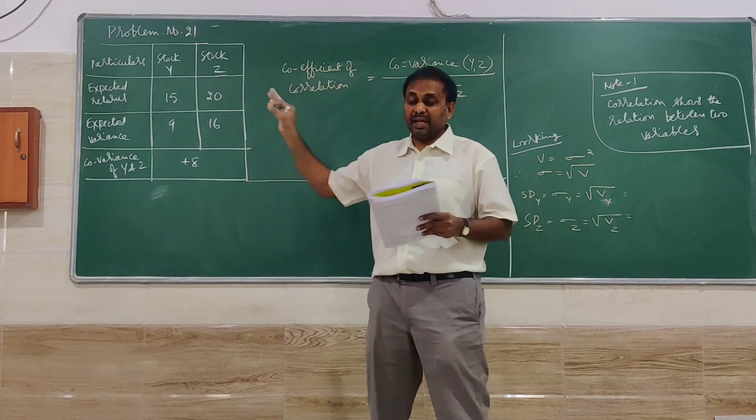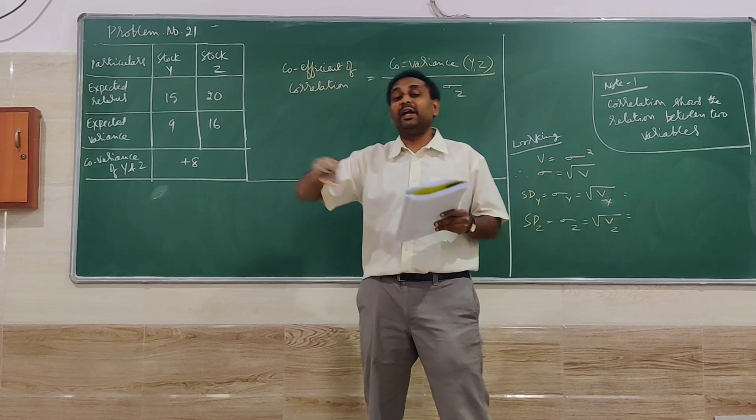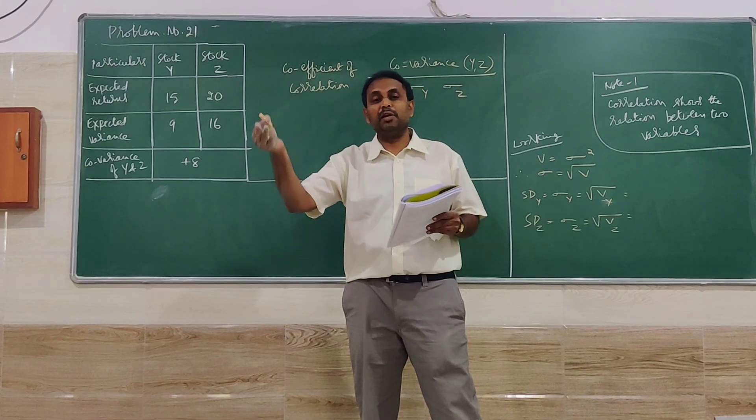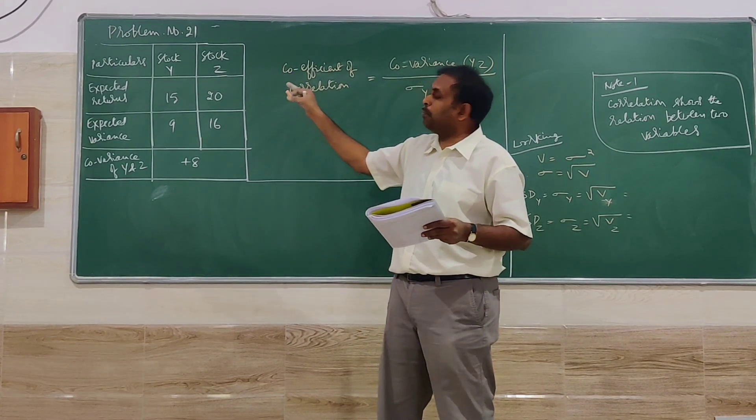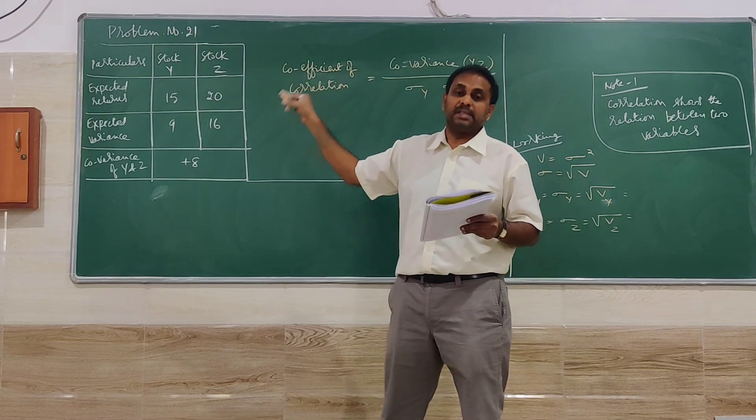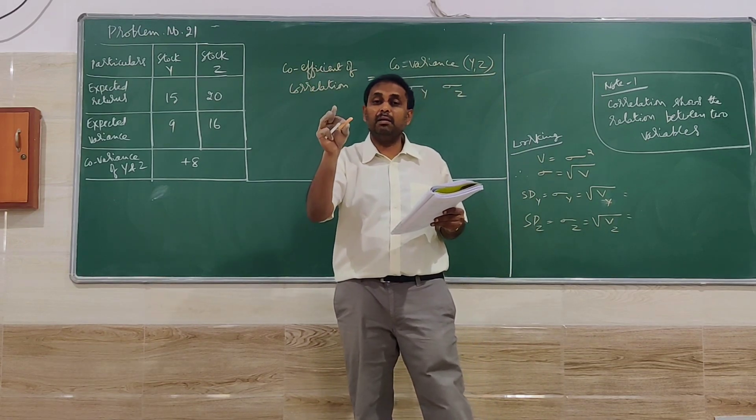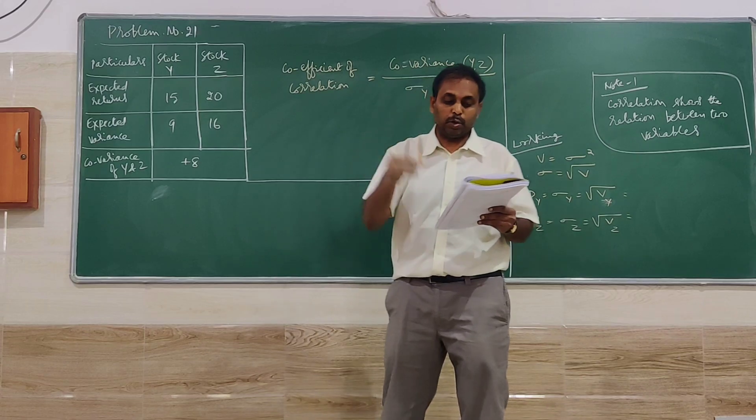If it is positive they can continue to hold. If it is negative then they have to think of going for a different combination instead of same combination of Y and Z. This is the main part of this particular question.